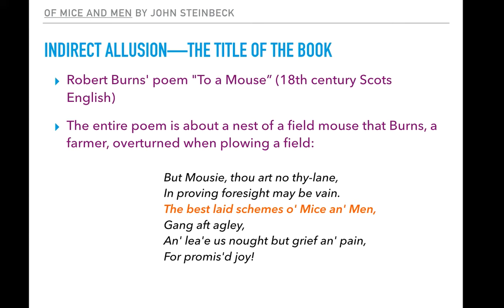He then compares the mouse to men and says, 'The best laid schemes of mice and men gang after glee,' meaning go awry — don't always go the way they should — 'and leave us not but grief and pain.' Even our best ideas, our best dreams, sometimes leave us grief and pain rather than the promised joy we had hoped for.